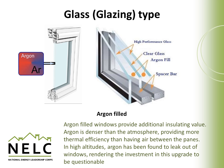Argon filled windows provide additional insulating value. Instead of an air cavity between the two panes of glass, we fill that cavity with argon. Argon is denser than the atmosphere and provides improved thermal efficiency over regular air. One thing that has been found recently is that at high altitudes with lower pressure, the argon has been found to leak out of the cavities, making the investment in argon filled windows more questionable in those cases. But this is a very available upgrade for most types of windows and is typically associated with the highest quality and highest insulating value window.